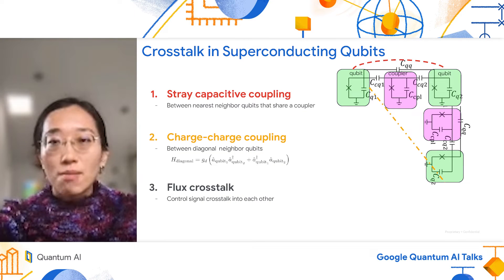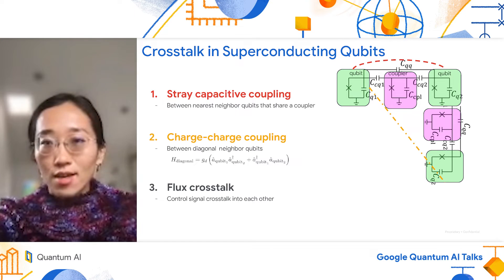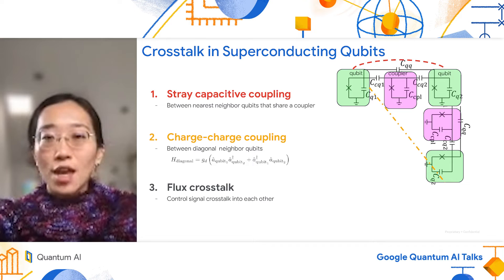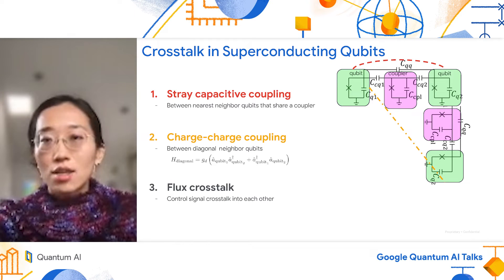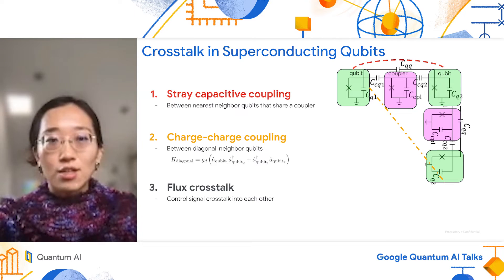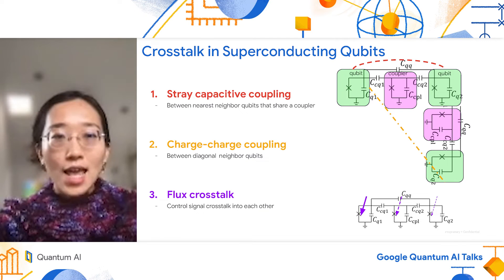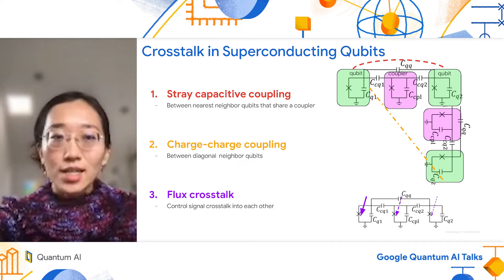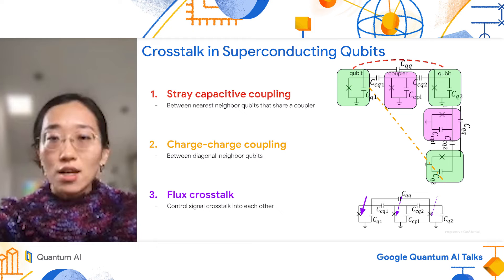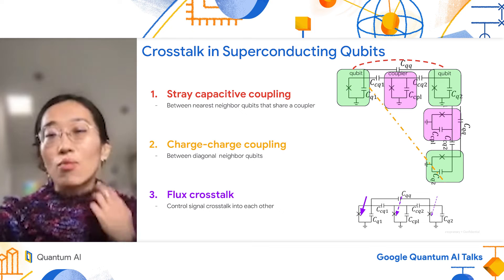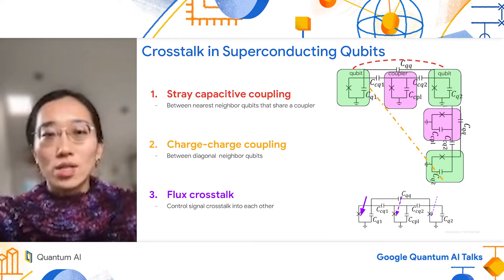Secondly, we also have charge-charge coupling for the simple fact that each superconducting qubit circuit has a capacitor that can host charge and therefore they can interact with each other. Because of the Coulomb decay, the leading term is between the diagonal neighbors of qubits that don't directly interact. Lastly, we also have flux crosstalk. The mechanism is very similar to inductive coupling, where the control flux into one superconducting SQUID loop will leak to the neighboring loop, which will induce the corresponding change in the frequency of the qubit.